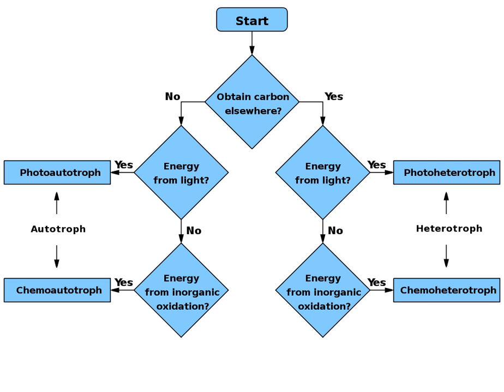Photoheterotrophs are heterotrophic phototrophs—that is, they are organisms that use light for energy, but cannot use carbon dioxide as their sole carbon source.